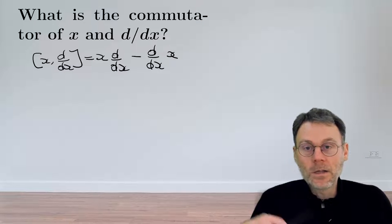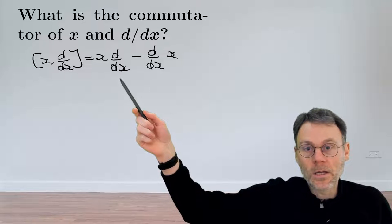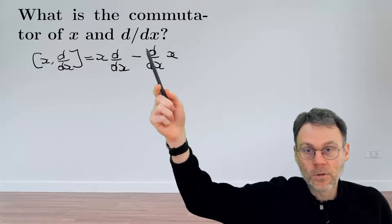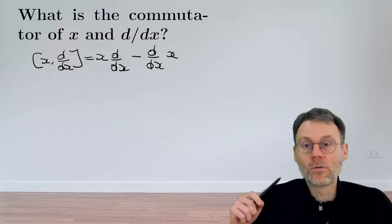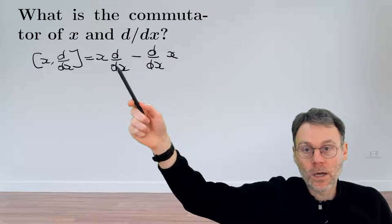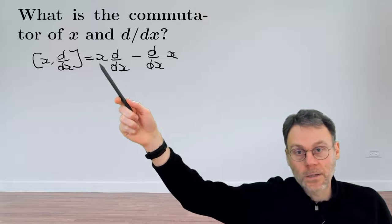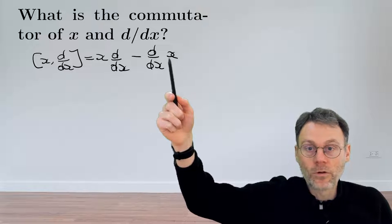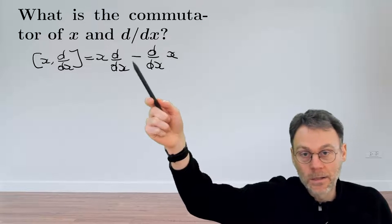This operator is formed as a difference between two sub-operators. The first operator takes the derivative with respect to x and then multiplies by x. In the second operator, we first multiply by x and then take the derivative.